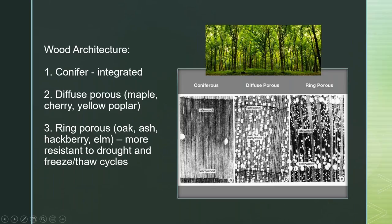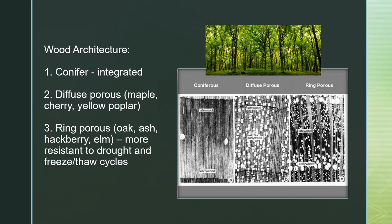The diffuse porous distribution is important: if you see a maple hollowing out, it may not be able to stand — especially if exposed to a lot of wind — because of this diffuse porous pattern. The ring porous pattern, found in oaks, hackberries, and elms, is more stable if the plant rots at the heart. Because of the ring porous architecture, those plants can actually stand a lot longer with heart rot. Ring porous species are also considered more evolutionarily recent and more resistant to drought and freeze-thaw cycles because of the diameter of their xylem and phloem vessels.